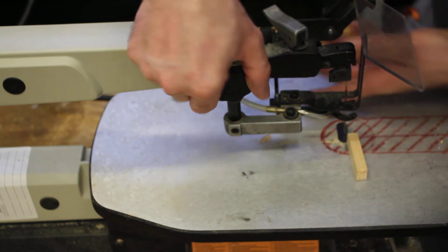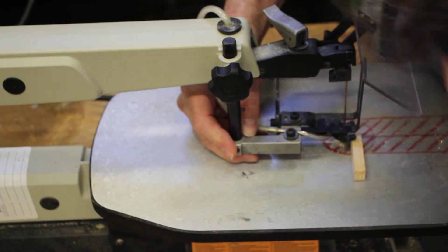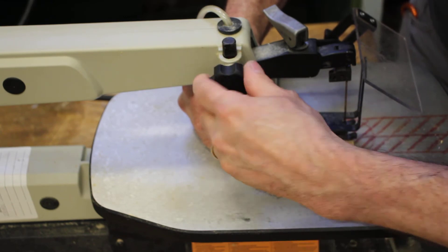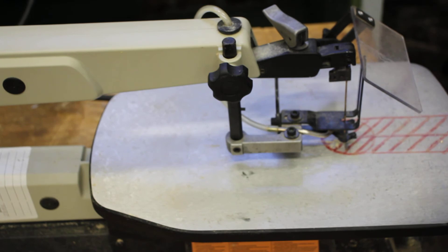Once again, we're going to adjust the saw so it's properly set, a little bit of tension on your piece of material. Turn it back on.